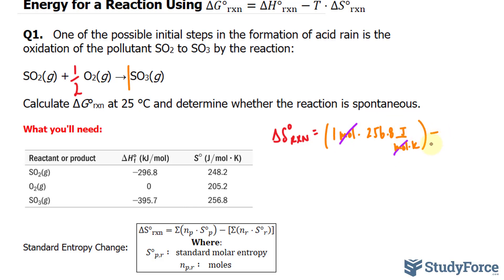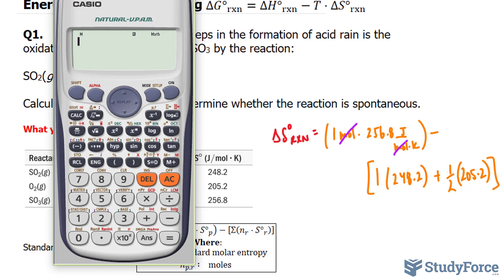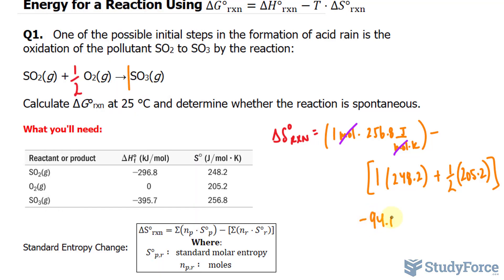And that is being subtracted by the sum of those found in the reactants. So we have 1 mole of SO2, that's being multiplied by 248.2, plus half a mole of oxygen gas. So multiplying 205.2 times half. Let's use our calculator to compute this: 256.8 minus the sum of these, so 248.2 plus 0.5 representing half, 205.2, and we get negative 94. Negative 94.0 joules per Kelvin is the standard entropy change.